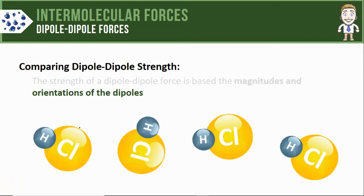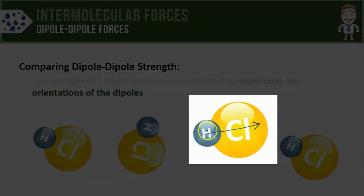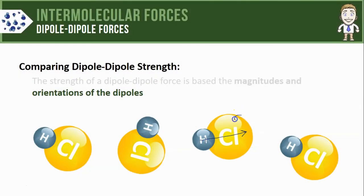So here's a model showing four separate hydrogen chloride molecules. Chlorine is the more electronegative atom so it's going to pull the shared electrons closer to itself creating a partial negative on the chlorine and a partial positive on the hydrogen.